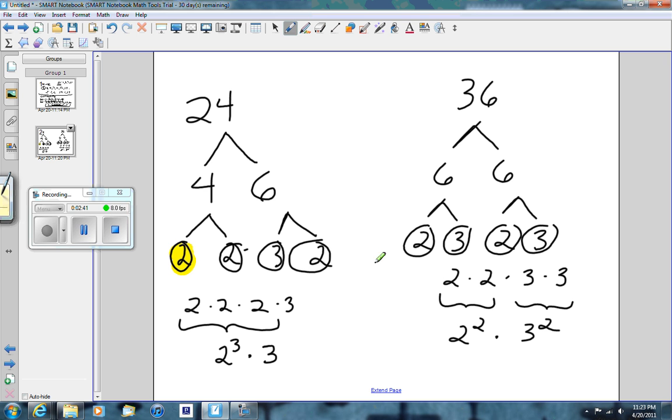They have a 2, and this one has a 2, this has a 2 here, and this has a 2 there. They share two 2's in common. They also share a 3. But not both 3's, just one 3 in common.